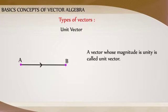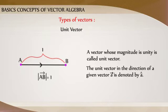Unit Vector: A vector whose magnitude is unity is called a unit vector. The unit vector in the direction of a given vector A is denoted by A cap.